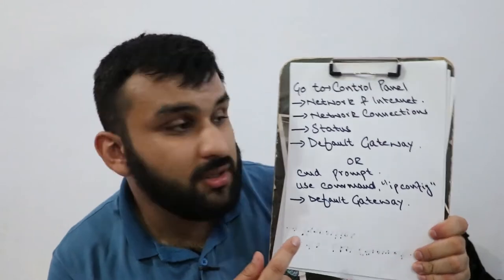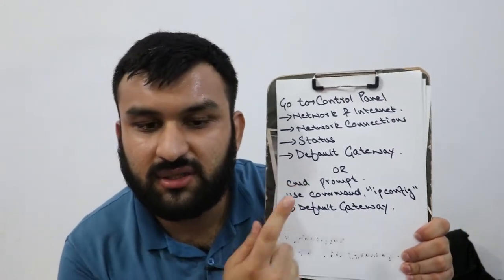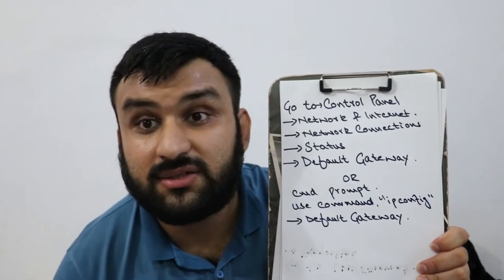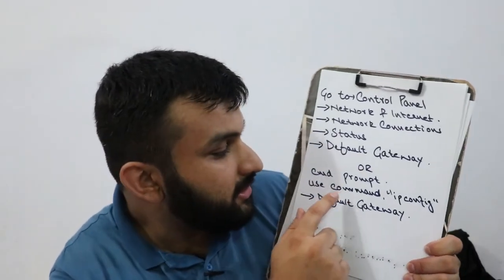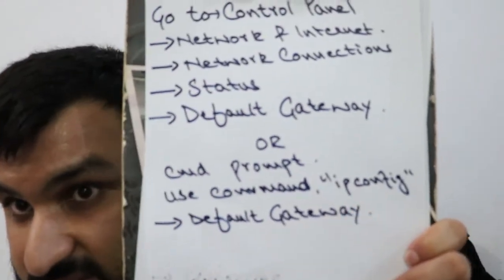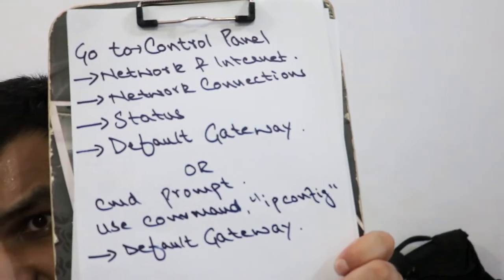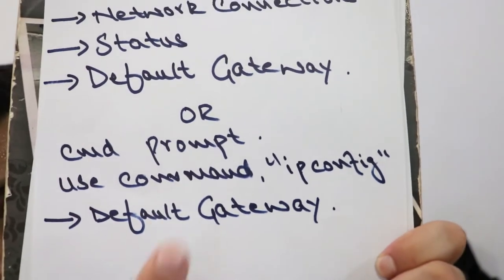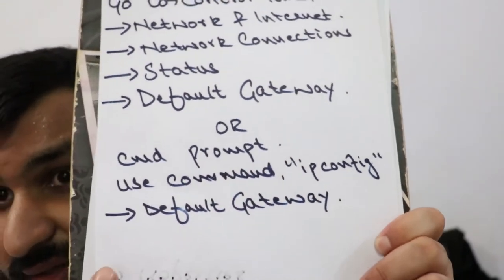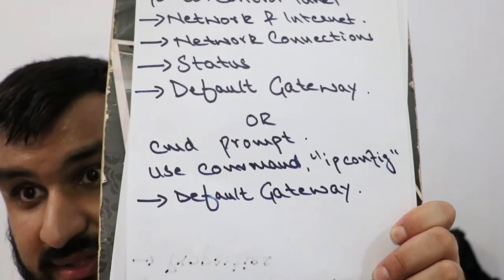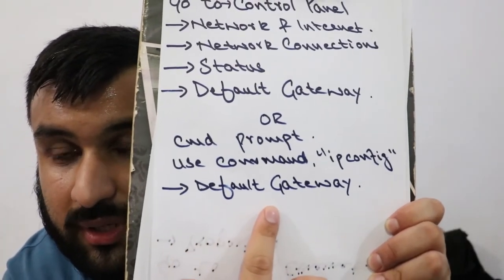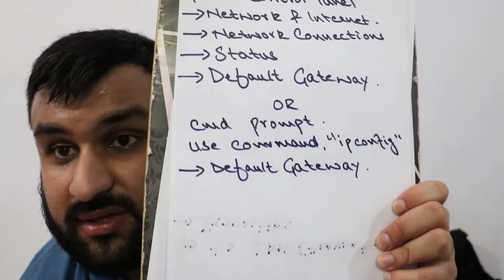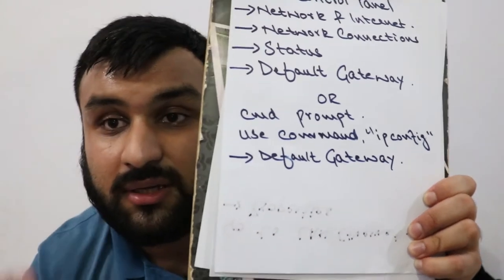Alternatively, you could use a simpler method: click Start, type CMD, and open Command Prompt. When it opens, just type 'ipconfig'. Whatever your connection is — LAN or Wi-Fi — go to that entry in the list and you'll see the default gateway, which gives you the default IP address for your router.